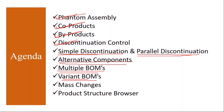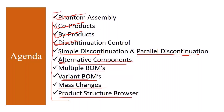Then mass changes — how to do mass changes in the system for BOMs and product structure. These are the topics we will be covering in the advanced bill of material functions.